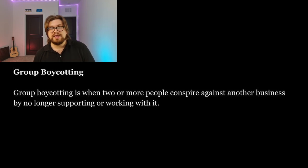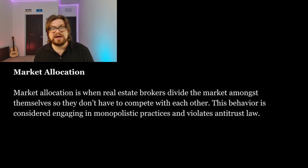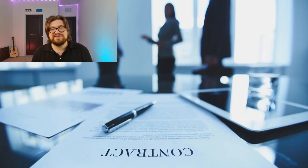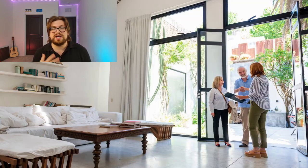Market allocation is when real estate brokers divide the market amongst themselves so they don't have to compete with each other. This behavior is considered monopolistic and violates antitrust laws. One example is brokers deciding to split up their area into different regions, designating a different real estate agent for each spot — meaning within each region there is no competition and homebuyers will end up paying more. A tie-in arrangement is when a seller requires the purchase of another separate product or service for the sale of the first. An example would be if a real estate agent agreed to sell a property, but only if the buyer agrees to list the property with their firm.